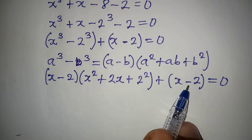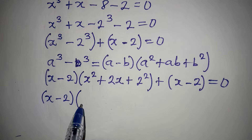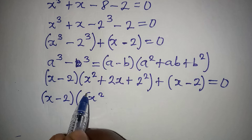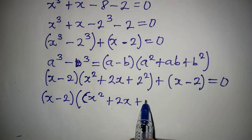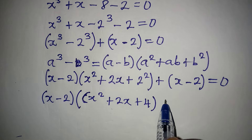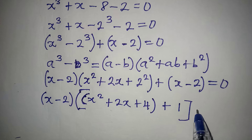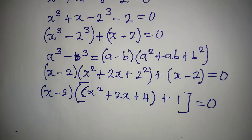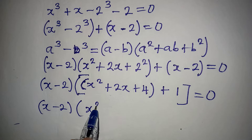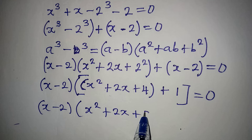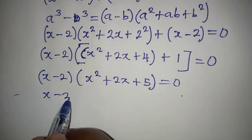Both parts equal zero. I have common factors so I factor out x minus 2. So x minus 2 is the common factor, and inside we have x squared plus 2x plus 4. Then for the other group we have plus 1, giving us x minus 2 times x squared plus 2x plus 5, all equal to zero.